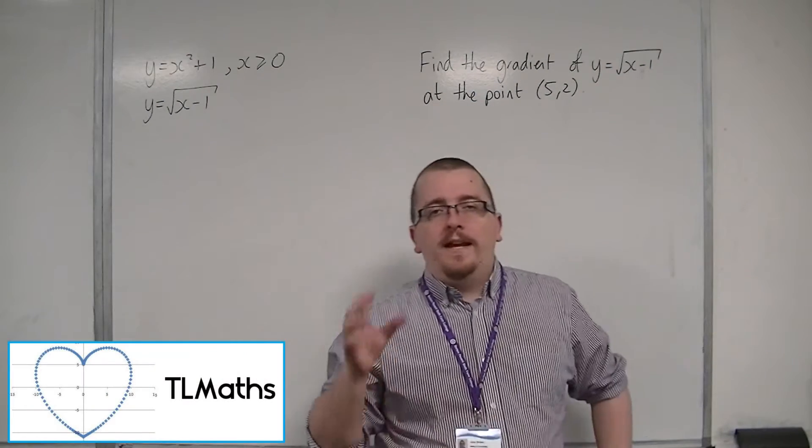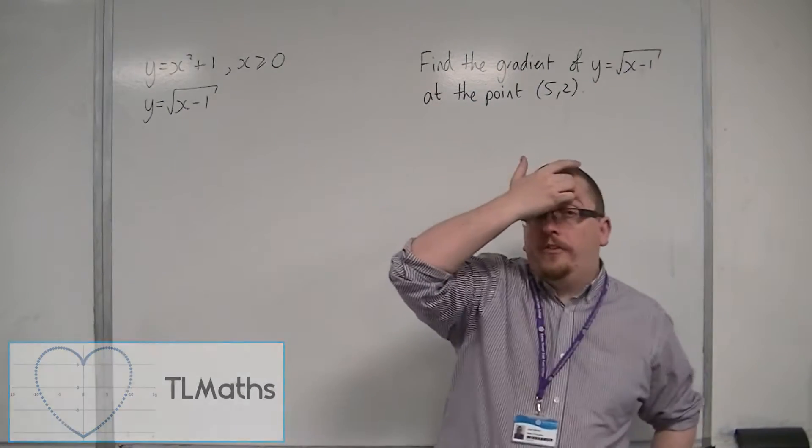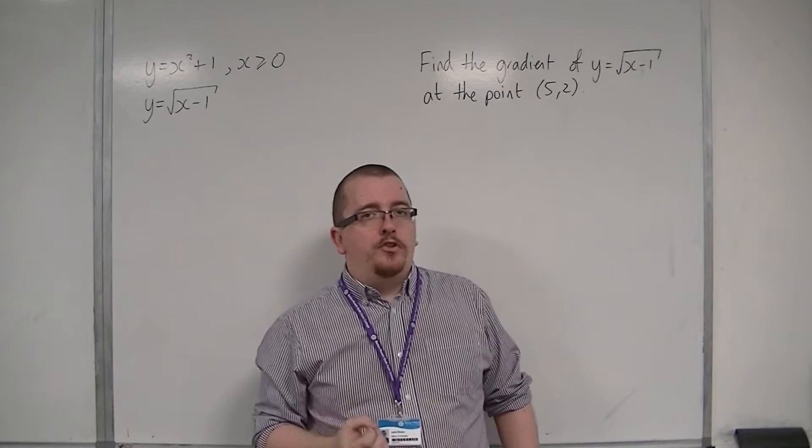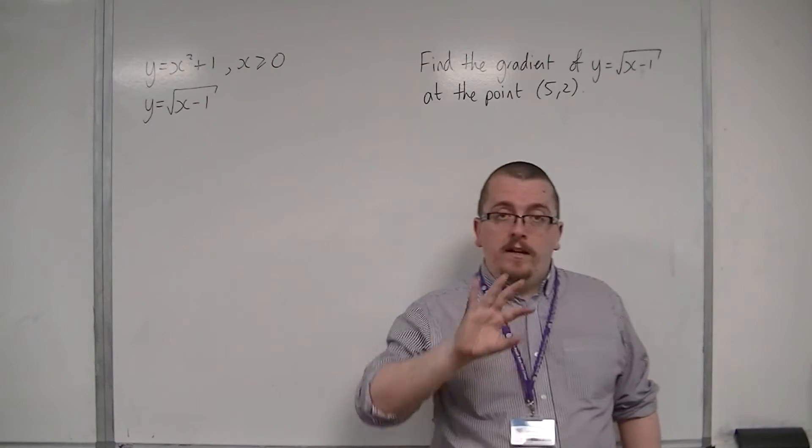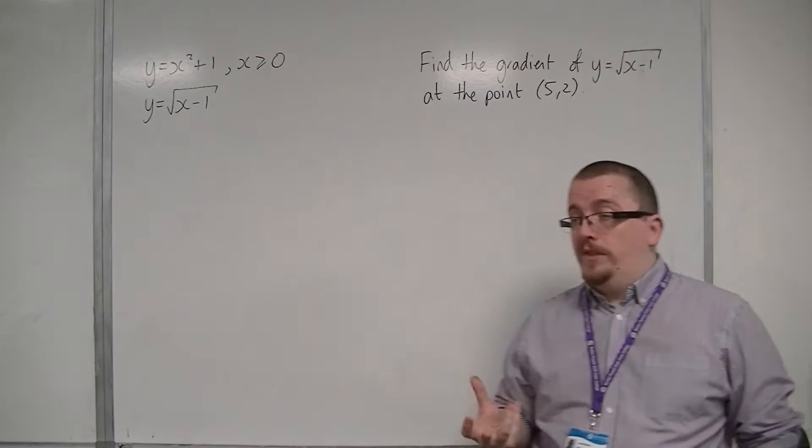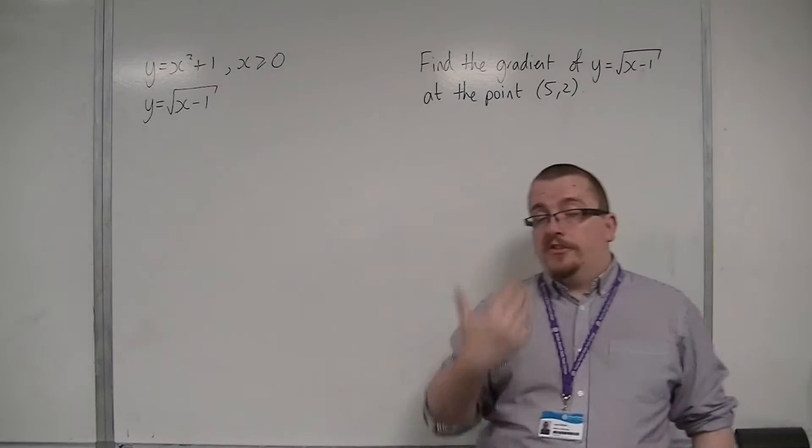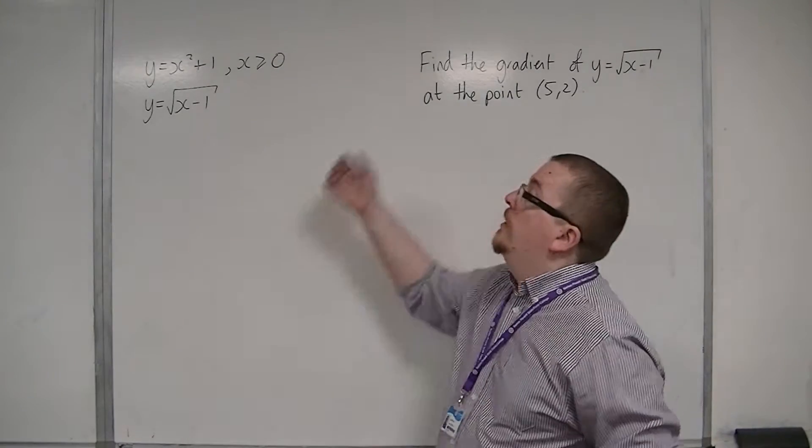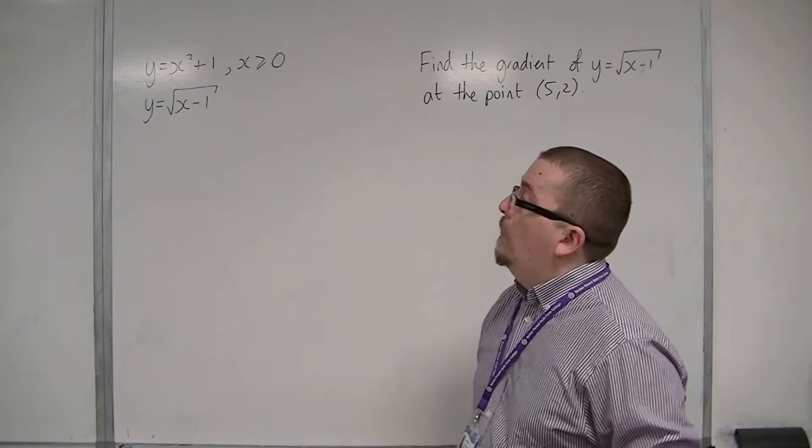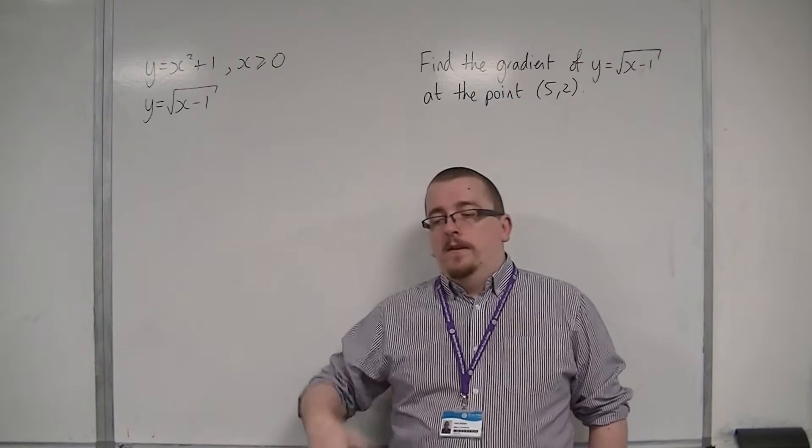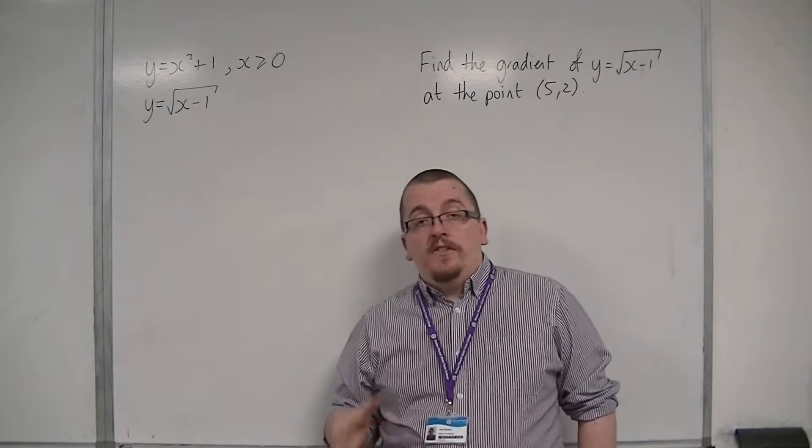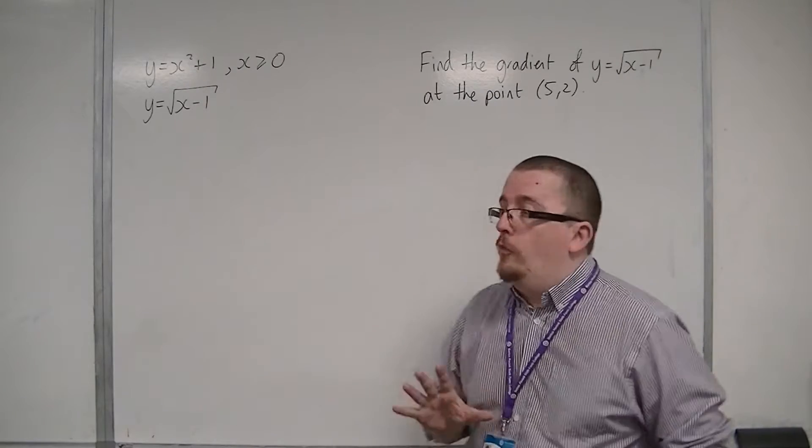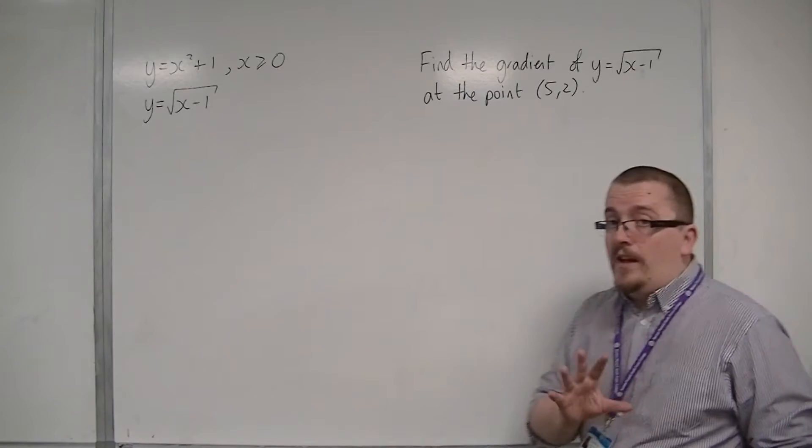Over the next two videos we're going to have a look at a couple of examples of differentiating an inverse function and finding a particular gradient at a particular point. We're going to start off by sketching y equals x squared plus 1 and y equals the square root of x minus 1. It's given that these are inverse functions of one another. So let's have a look at them.